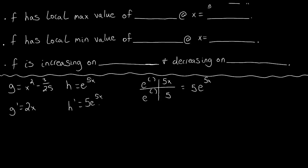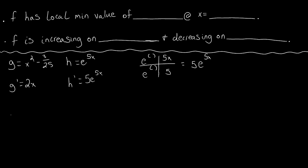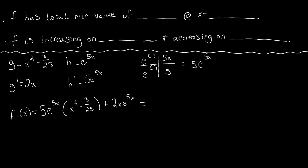Now, using the product rule, f prime of x follows g times h prime plus h times g prime. So we have 5e to the 5x times (x squared minus 3 over 25), plus 2x e to the 5x. I'm going to distribute the 5e to the 5x into the parentheses. So we get 5x squared e to the 5x, and then 5 times negative 3 over 25 simplifies — the 5 divides into 25 five times — giving us minus 3 over 5 e to the 5x, plus 2x e to the 5x.